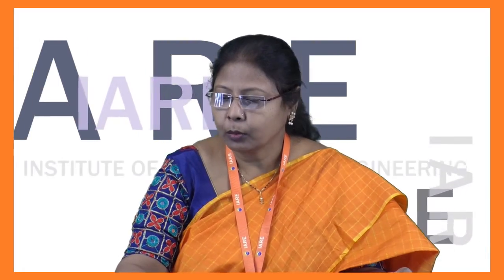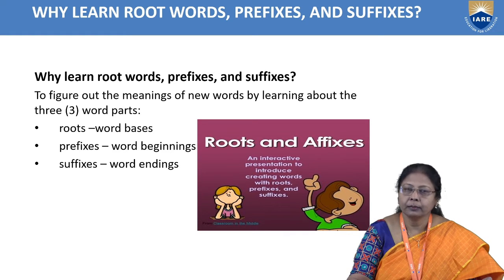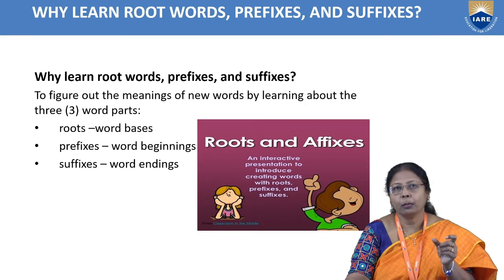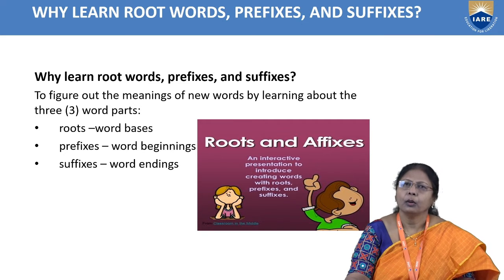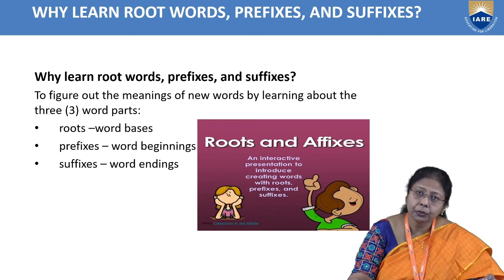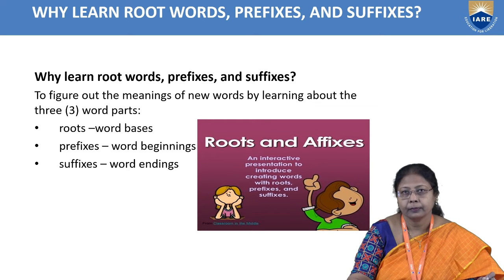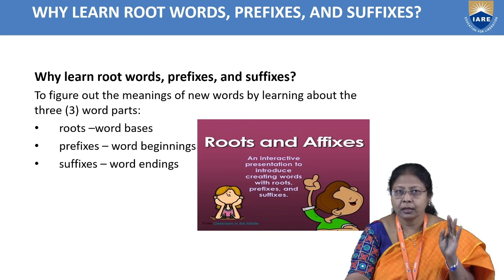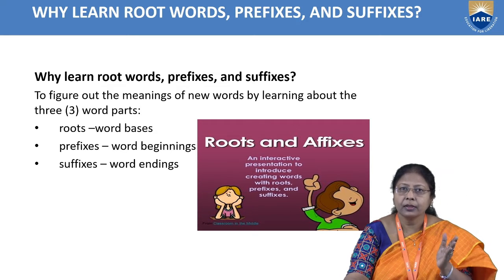Let's move on to the session on root words. First of all, what is a root word? A root word is a word without a prefix in front or a suffix at the end. The root word is the main word used to form other words. Why should we learn root words, prefixes, and suffixes? To figure out the meaning of new words. By learning these three word parts — roots (base words), prefixes (word parts at the beginning), and suffixes (word parts at the end).